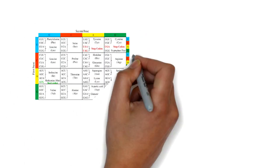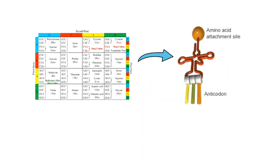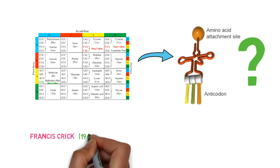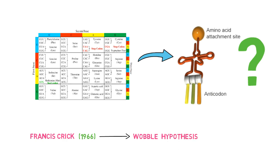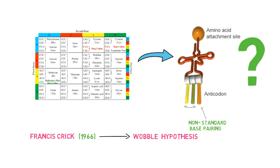The fact that there are 61 amino acid coding codons and roughly 40 tRNA molecules presented a problem. In 1966, Francis Crick proposed the wobble hypothesis to account for this. He postulated that the 5' base on the anti-codon was not as spatially confined as the other two bases, and could thus have a non-standard base pairing. This would account for 60 codons for 40 tRNA.